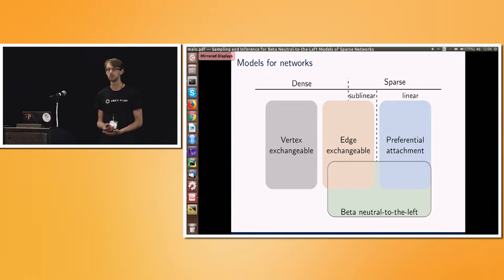In previous work, we proposed beta-neutral-to-the-left models, so they kind of give us all those three regimes: dense, sublinear sparsity, linear sparsity. And the paper that I'm presenting, we showed how to make those models tractable. So we've now got these statistically useful models, and they give us things which those exchangeable models couldn't.